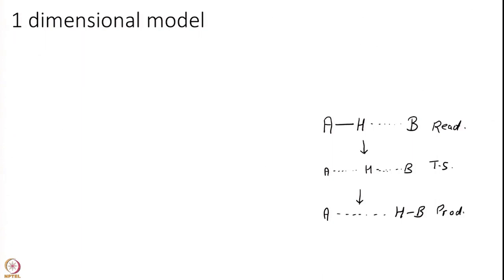Of course it is a complex system — A and B can be large molecules and you can have solvent surrounding all of this. But today I just want to keep it simple and look at one dimension only, which is this A–H distance. This distance increases going toward the product, and I want to think of this distance as my reaction coordinate Q — the only coordinate I will consider today. In the next module we will think about how to include the other coordinates as well.